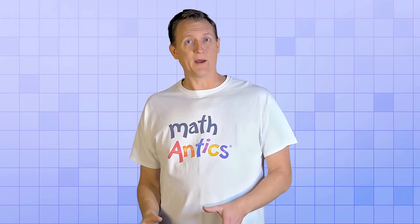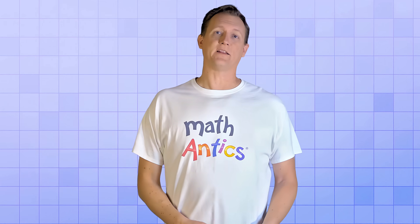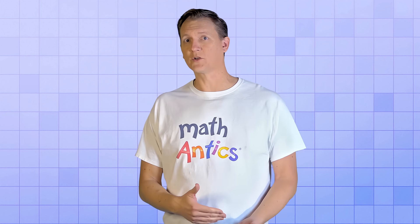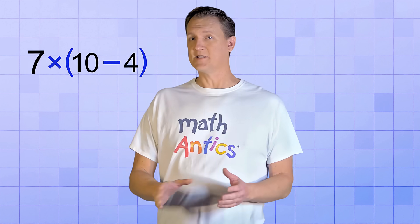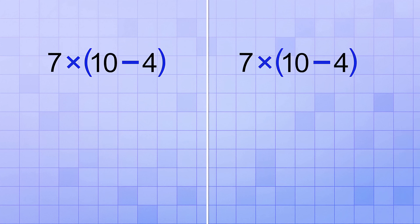Now before we wrap up, there's one more important thing that you should know about the Distributive Property. You already know that the Distributive Property works when the members of a group are being added. But it works the same way for members of a group that are being subtracted, like in this problem. 7 times the group 10 minus 4. You could do this problem the typical way and simplify the group first. 10 minus 4 is 6, and then 7 times 6 gives us 42.